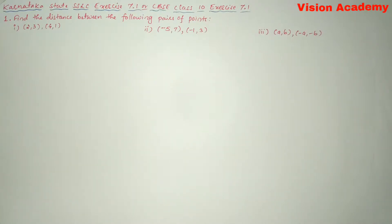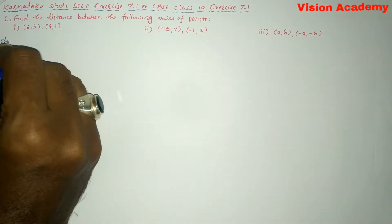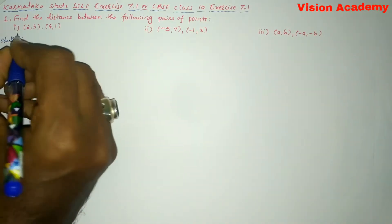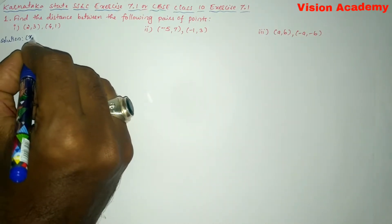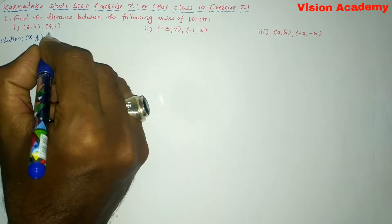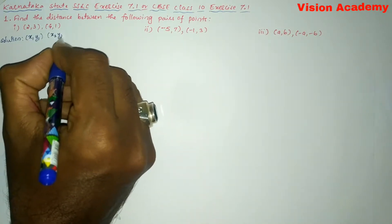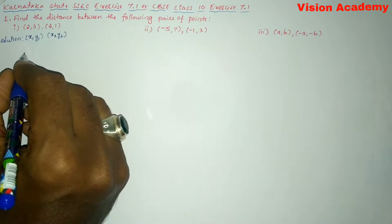Question number one: find the distance between the following pairs of points. Roman number one: (2, 3) and (4, 1). So now let us find the solution for the given problem. Here, let us write this one as x1, y1 and this is x2, y2. Let us write the distance formula.